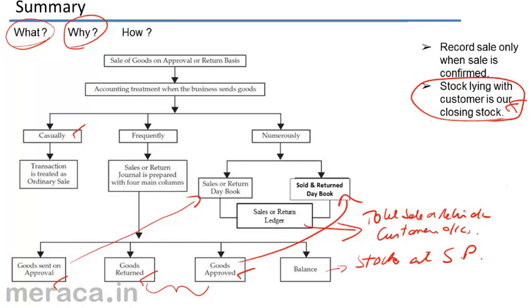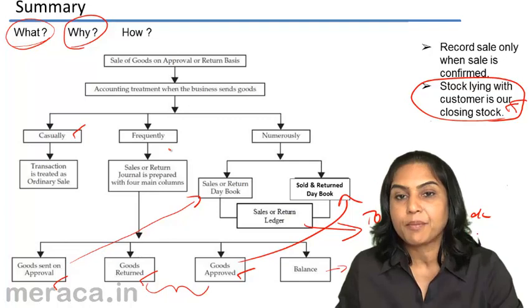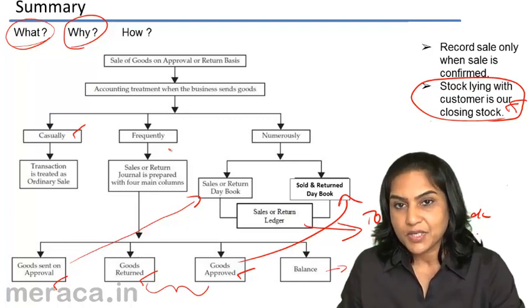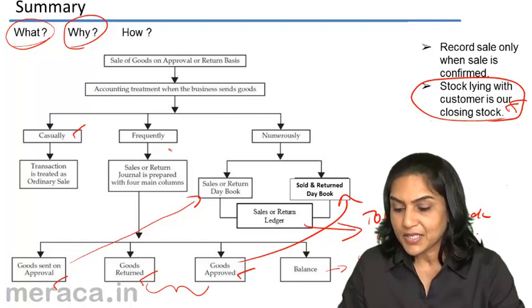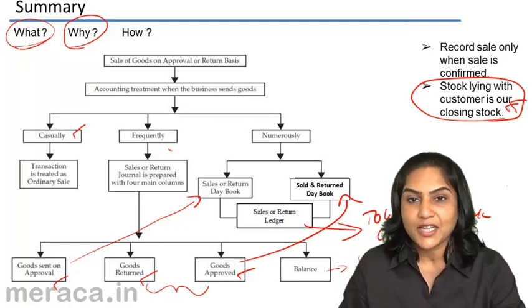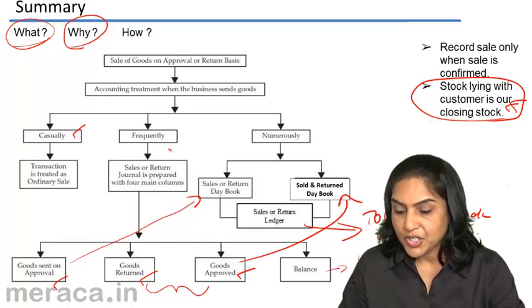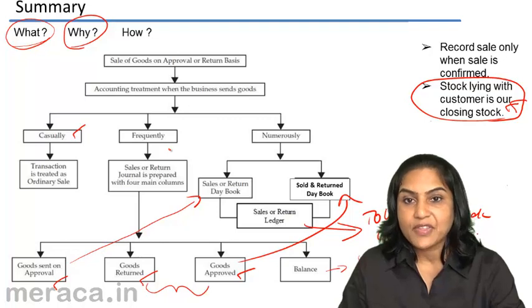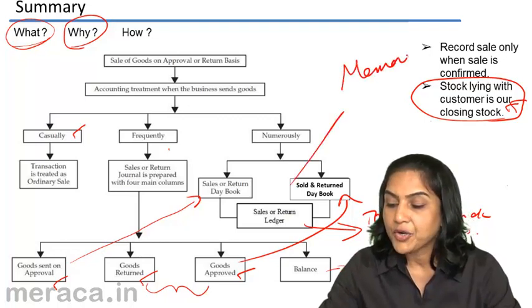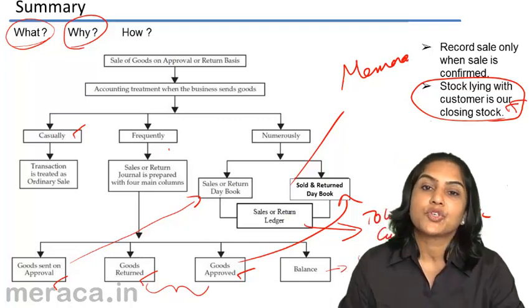This ledger may or may not be maintained when goods are sold frequently. Thus, if greater control needs to be maintained over goods lying with customers and the related debtors on goods sent on approval basis, we have an elaborate system of a sale or return day book, a sold and returned day book, and a sale or return ledger. It is to be noted that these day books and ledgers are all memorandum books and do not form a part of the main books of account.